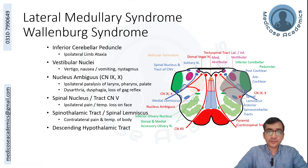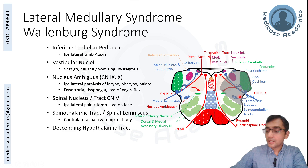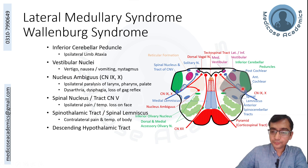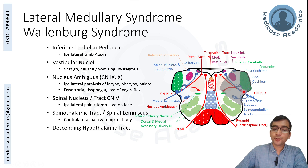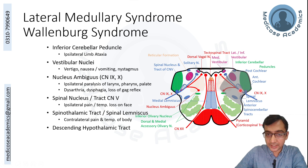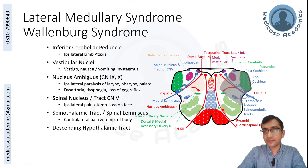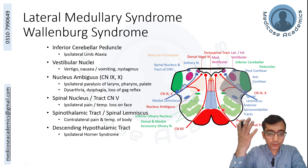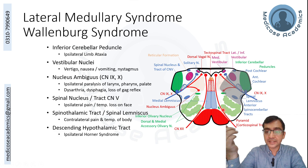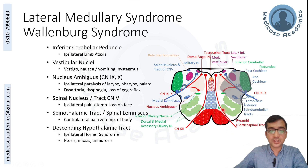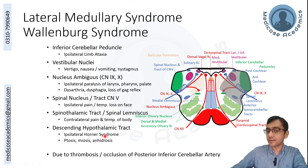The descending hypothalamic fibers travel with the spinothalamic tract and supply the sympathetic outflow nuclei. Damage leads to loss of sympathetic outflow, resulting in Horner syndrome — identified by ptosis (drooping of the eyelid), miosis (pinpoint pupils), and anhidrosis (lack of sweating). This is all due to occlusion of the PICA (posterior inferior cerebellar artery).